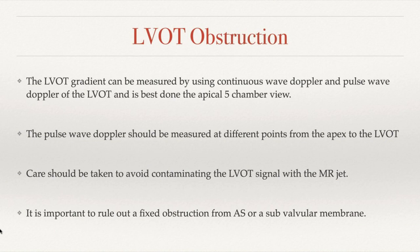We use continuous wave Doppler to get the maximum velocity and pulse wave Doppler to measure velocities at different sites. It is best done at the apical five-chamber view. With pulse wave Doppler, you should walk it from the apex up to the level of the LVOT, because you can have obstruction at different sites — apical, mid-cavity, or at the LVOT. It's important to ensure we're not contaminating the LVOT signal with MR jets, and to rule out a fixed obstruction such as aortic stenosis or a subvalvular membrane.